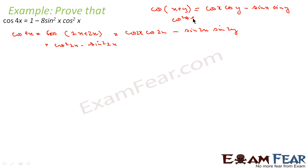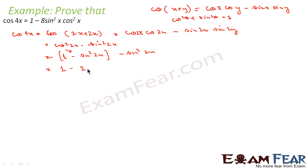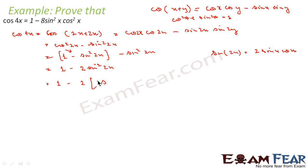So this is nothing but cos squared 2x minus sin squared 2x. We also know that cos squared a plus sin squared a equals 1, so cos squared 2x equals 1 minus sin squared 2x. Substituting, we get 1 minus sin squared 2x minus sin squared 2x, which is 1 minus 2 sin squared 2x. Now we know that sin 2x equals 2 sin x cos x, so sin squared 2x equals (2 sin x cos x) squared.